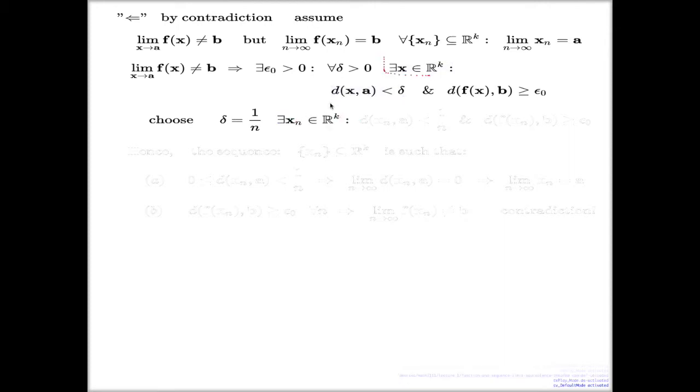This line claims that there is an element, which this time I will denote with the index n, because for different deltas, different element. That's why I reflect this dependence, x sub n, such that on one hand this is true. That's exactly this statement. On the other hand, this is true.